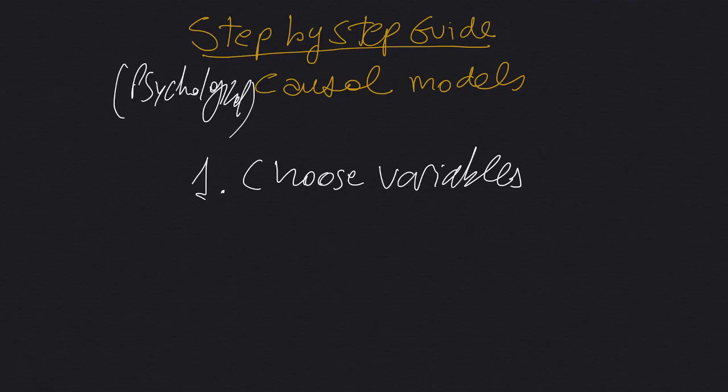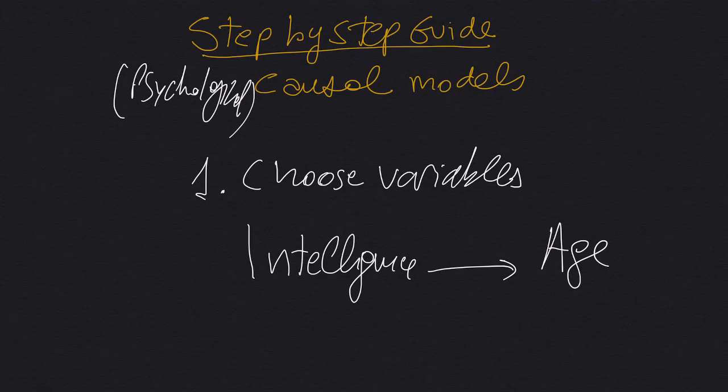So for example, if your causal variable is intelligence, and then you are assuming that intelligence affects age, well, that's actually not a plausible model, because a change in intelligence cannot produce a change in age. So there is no possibility in this model. It's not possible that intelligence causes age.